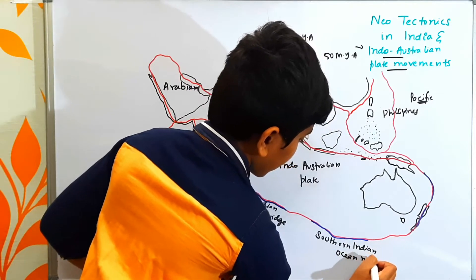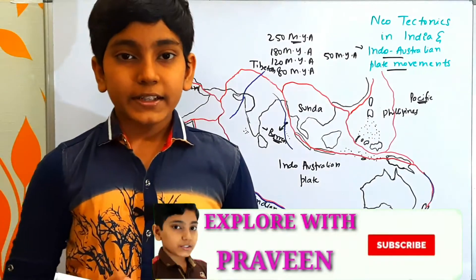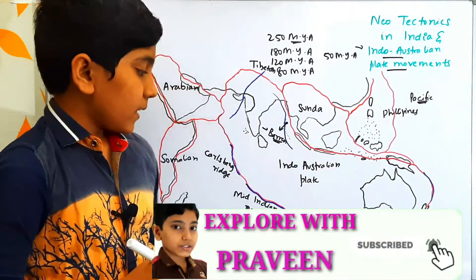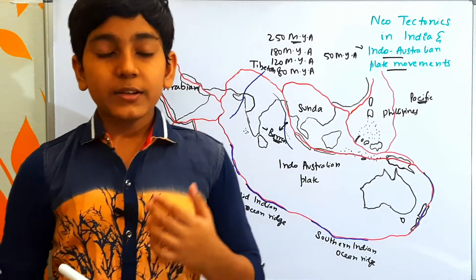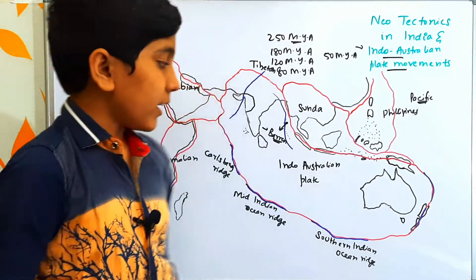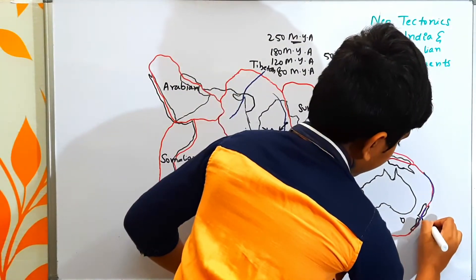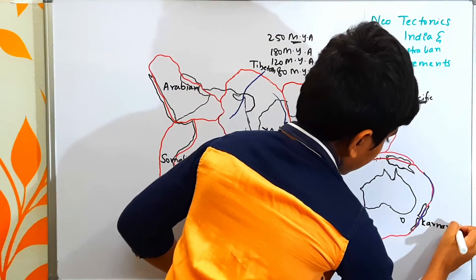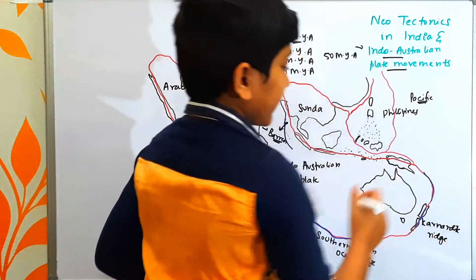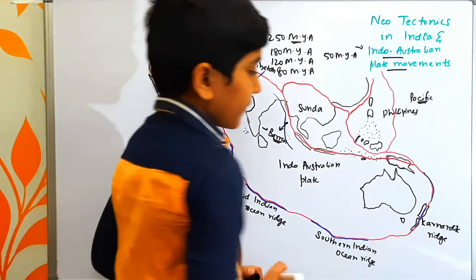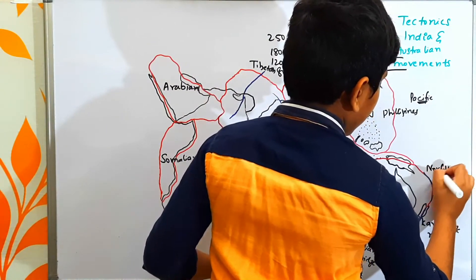We have already understood about mid-oceanic ridges in the previous class on plate tectonics. The mid-oceanic ridge is formed when there is a divergent plate margin between any two oceanic plates. Here, in the country New Zealand, we find the Carnarctic Ridge. And here, in the regions of the Pacific Ocean and the Coral Sea, we find the Norfolk Ridge.